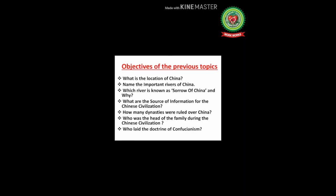Before we start today's topics, I want to take feedback of previous topics through some questions. First: what is the location of China? Second: name the important rivers of China. Third: which river is known as the 'Sorrow of China' and why? Fourth: what are the sources of information for the Chinese Civilization? Fifth: how many dynasties ruled over China? Sixth: who was the head of the family during the Chinese Civilization? Seventh: who led the doctrine of Confucianism?